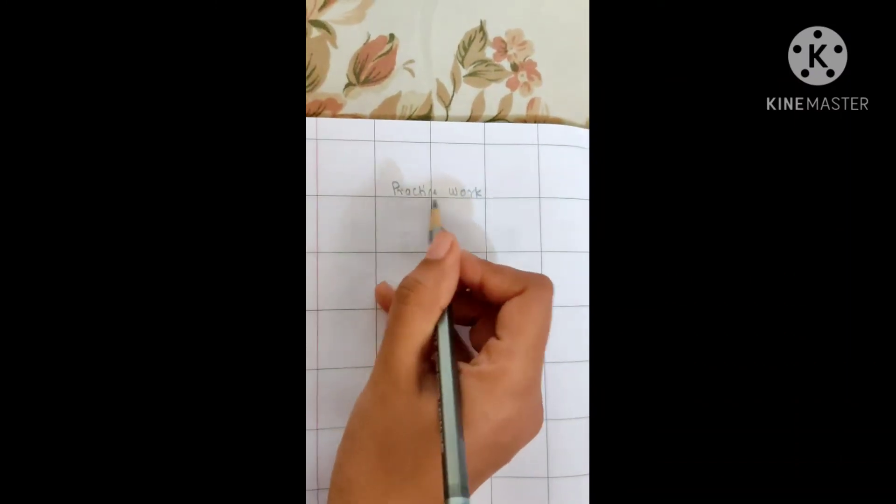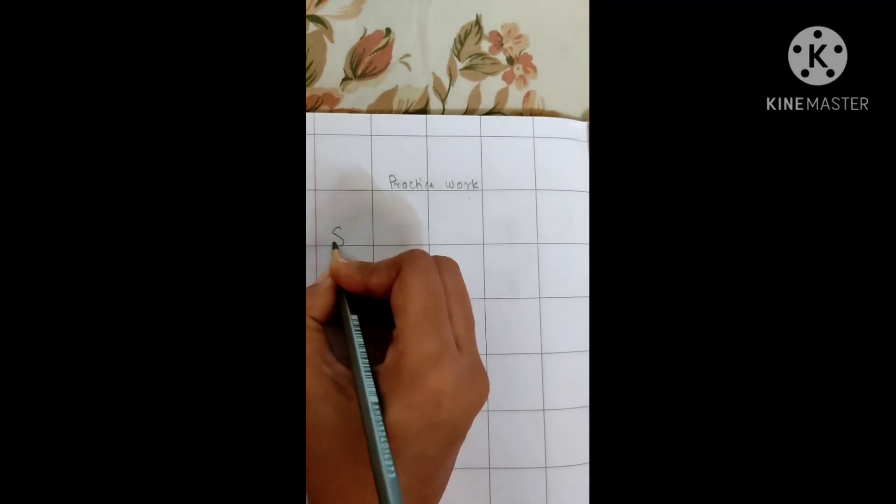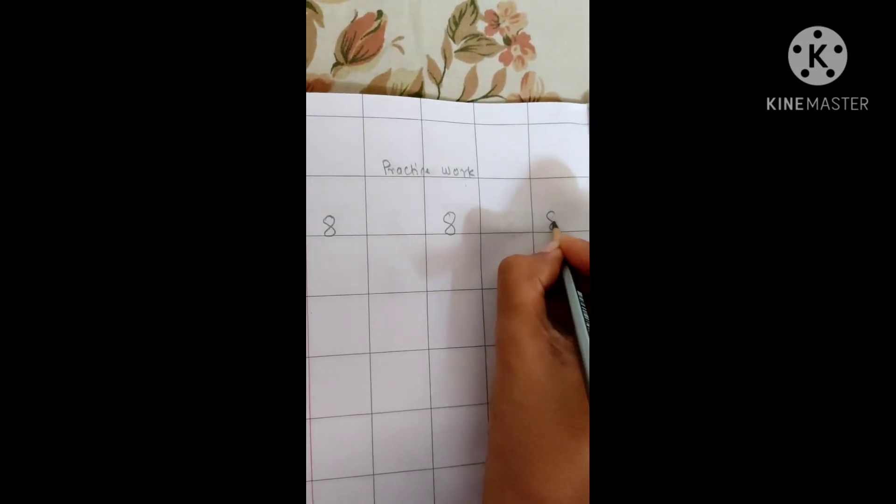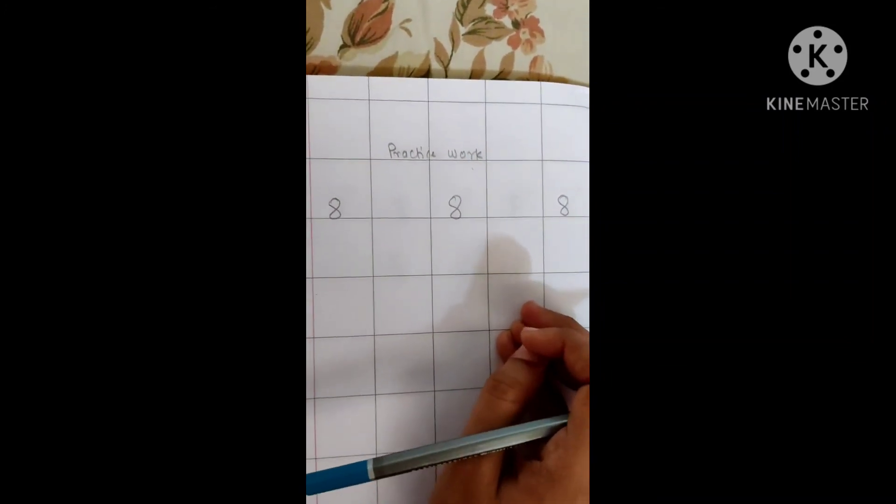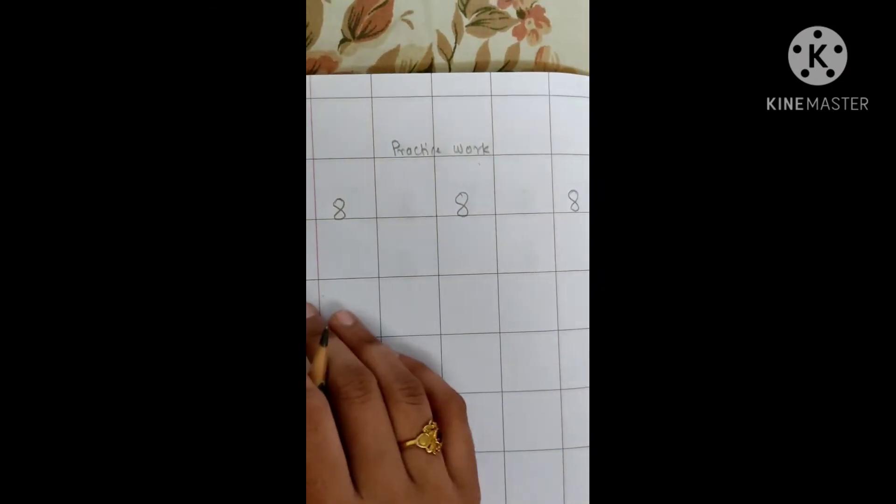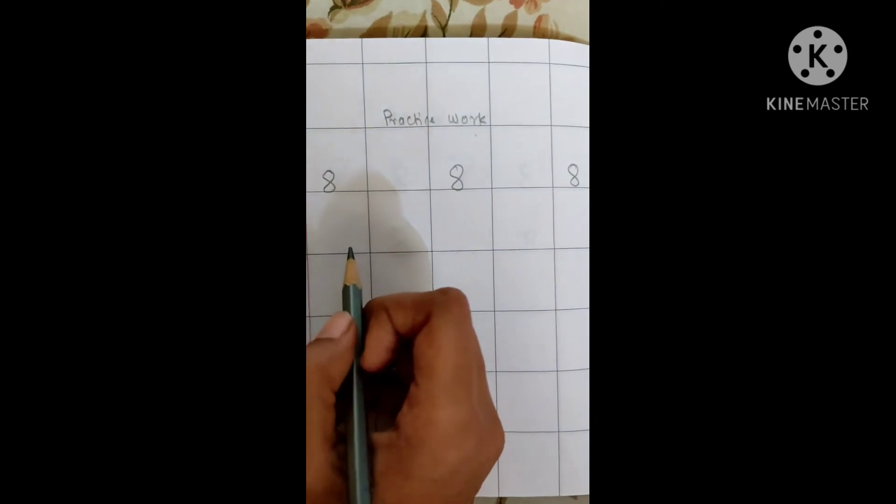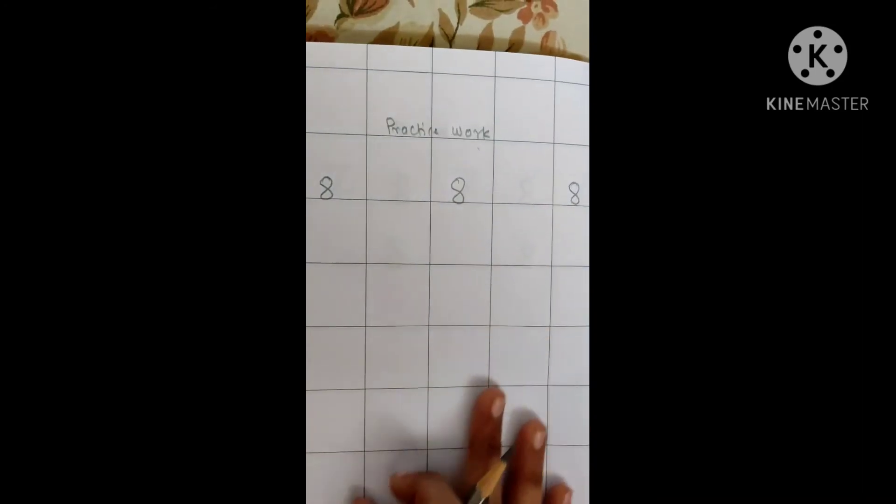And then go to the next page. Practice work. Write 8. You can take your mama's help to write 8 because that is difficult for you to write now. But you can do like mama can help you, but try to write on your own. Okay, thank you, bye.